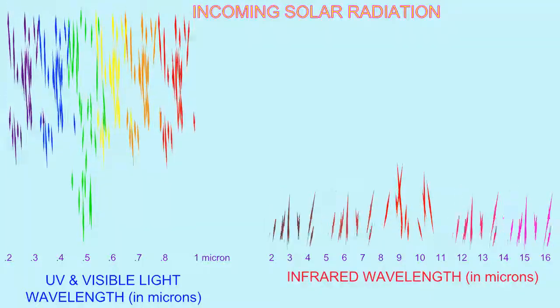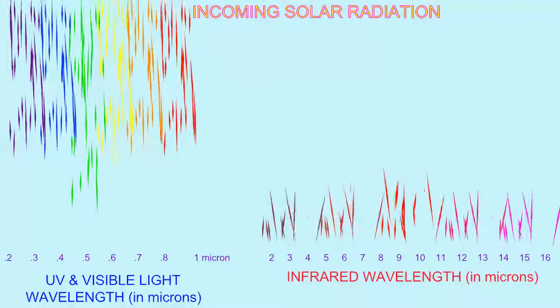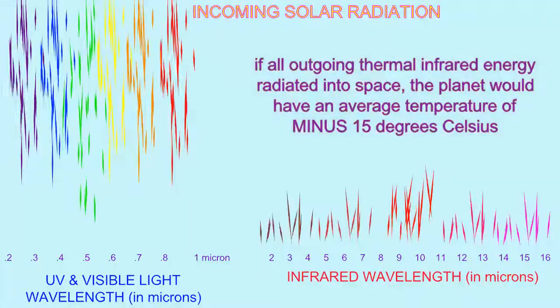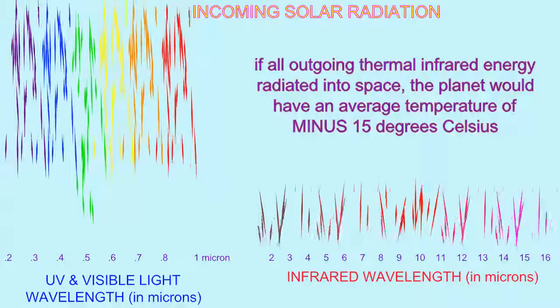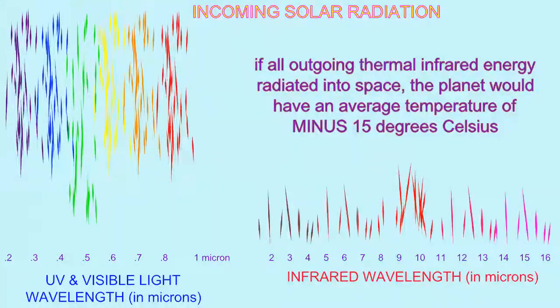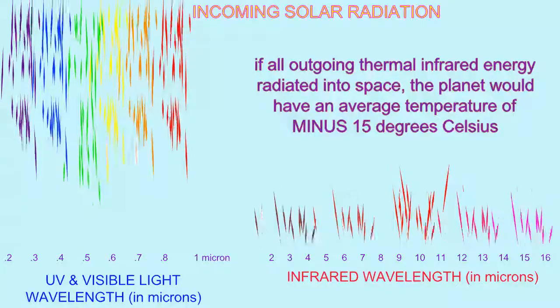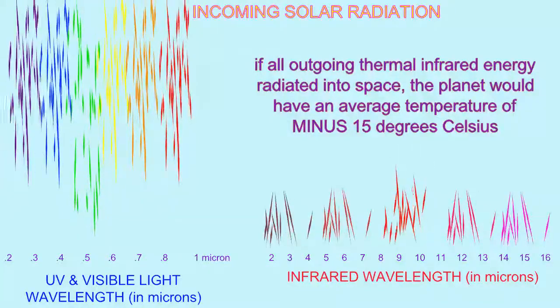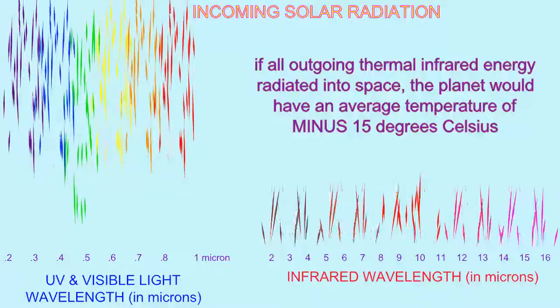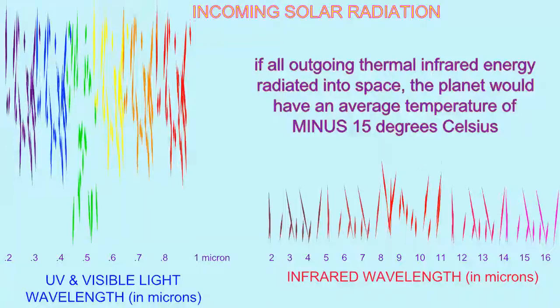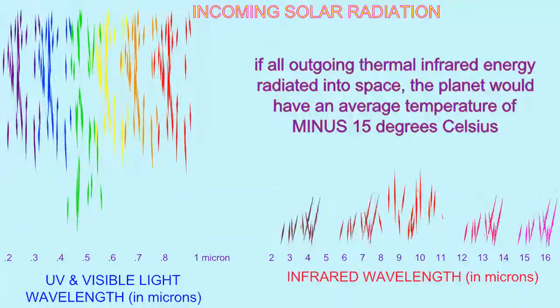Peaking in the range of eight to ten microns. If all of this radiation left planet Earth and radiated out into space, there would be no greenhouse effect, and the average temperature of our planet would be minus 15 degrees Celsius, too cold to sustain life as we know it.